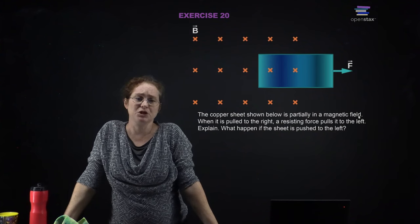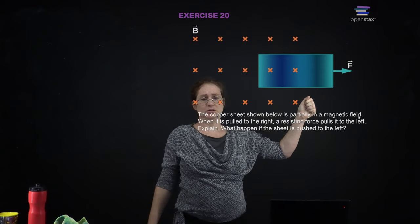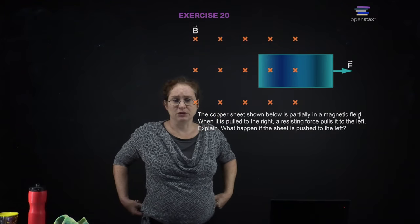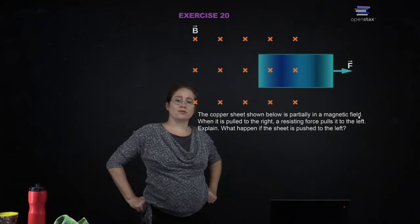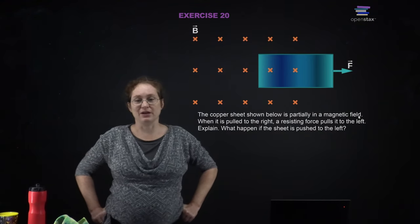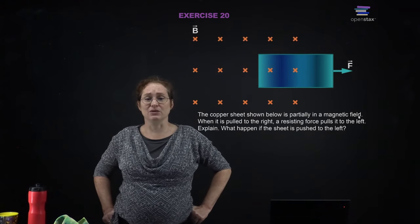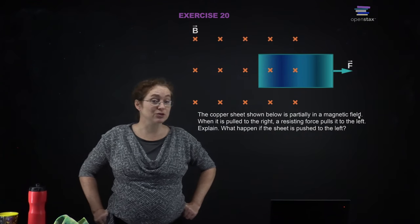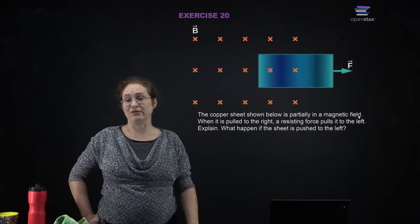You have a copper sheet partially in a magnetic field. When it is pulled to the right, a resisting force pulls it to the left. That's because it is inducing eddy currents trying to keep the magnetic flux constant, and that uses energy. What happens if you push it to the left? The same thing — because if you push it to the left, you are also changing the magnetic flux, and it is going to resist changing the magnetic flux.